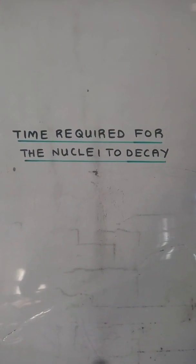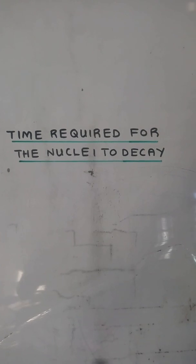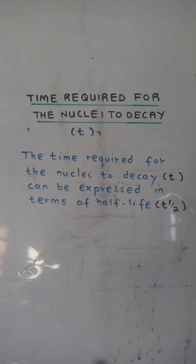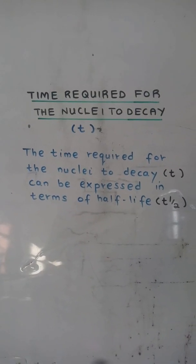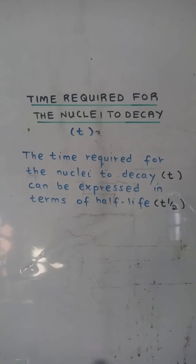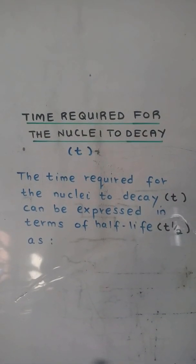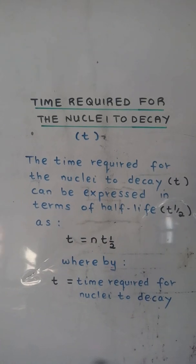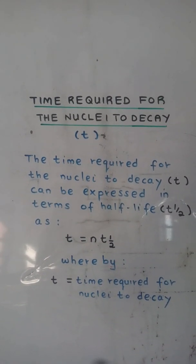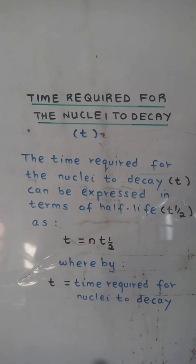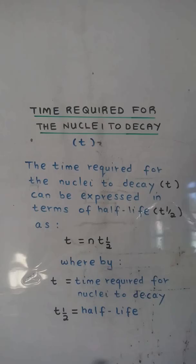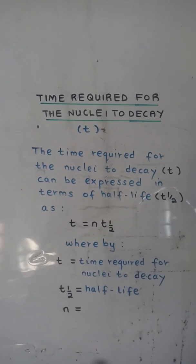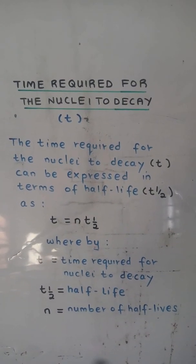Time required for the nuclei to decay. The time required for the nuclei to decay can be expressed in terms of half-life as t = nt½, whereby t represents time required for nuclei to decay, t½ represents half-life, and n represents number of half-lives.